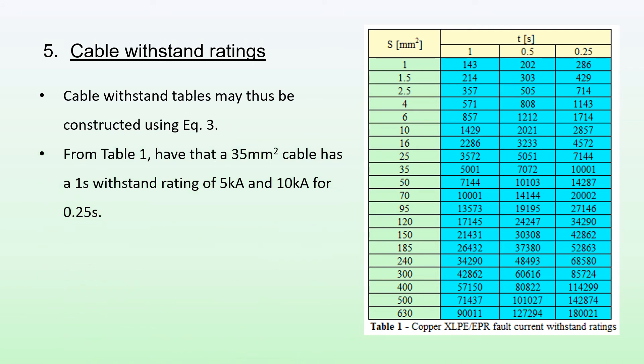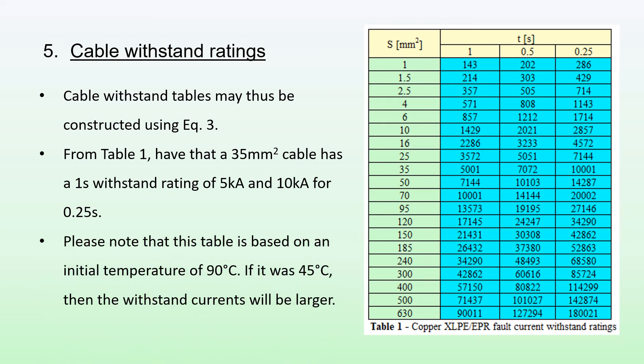For example, from Table 1, have that a 35 millimeter squared cable has a 1 second withstand rating of about 5 kA and a 0.25 second withstand rating of around 10 kA. Please note that this table is based also on an initial temperature of 90 degrees, so if I use an initial temperature of say 45 degrees, then the withstand currents of course would be larger.